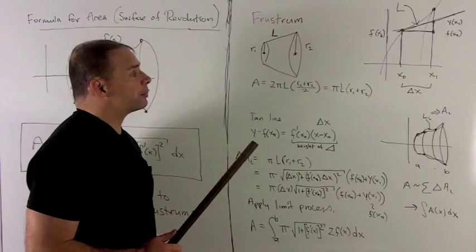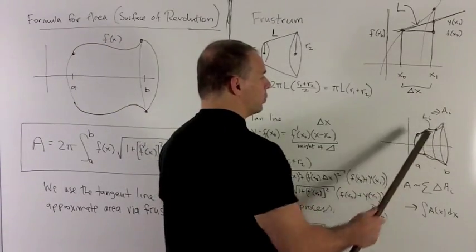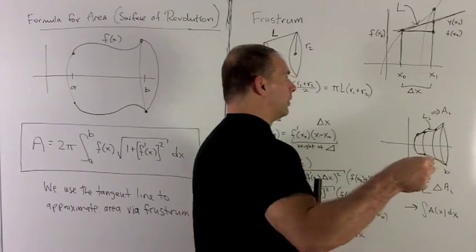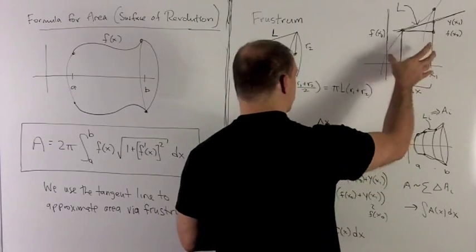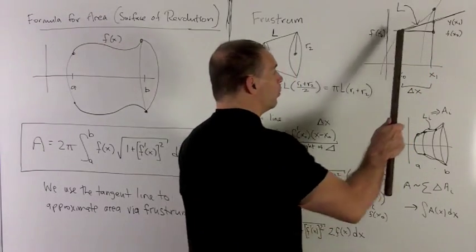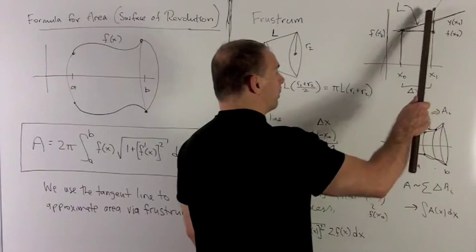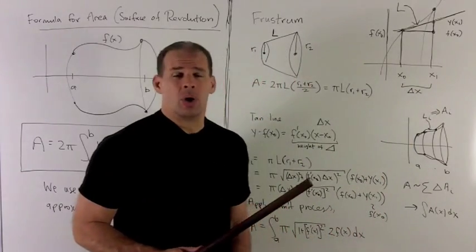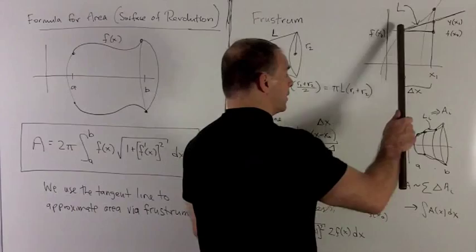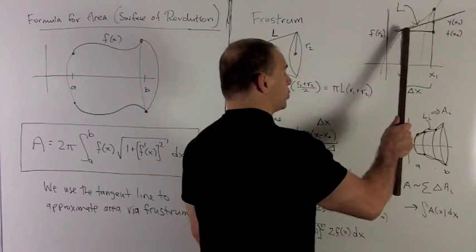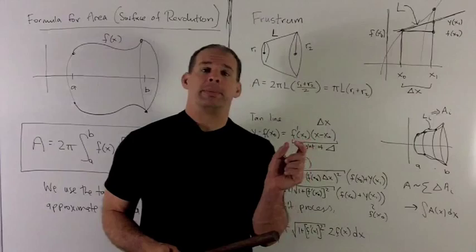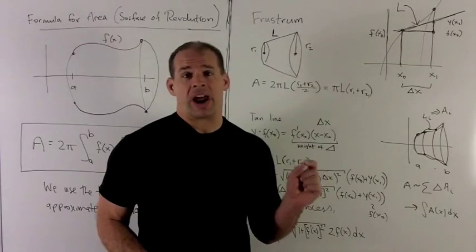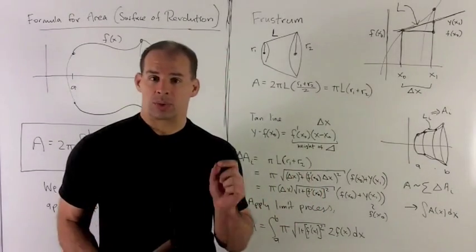If I take my surface of revolution and chop it up into little pieces, each little subinterval gives a mini surface of revolution. That piece is not exactly a frustrum, but if I use the tangent line, I'll have something close enough to a frustrum to approximate the area. When I take the limit, all the differences crush down to zero, and the limiting process gives us the total area.